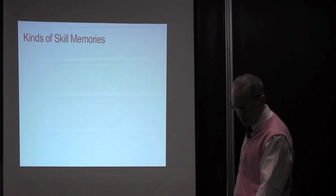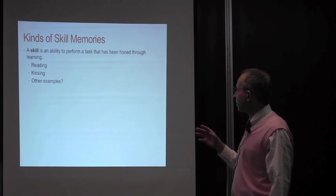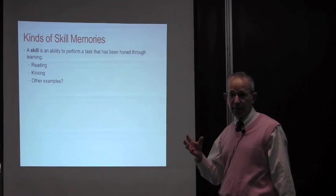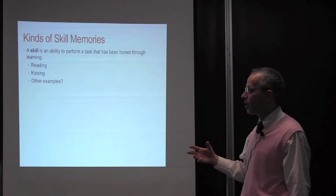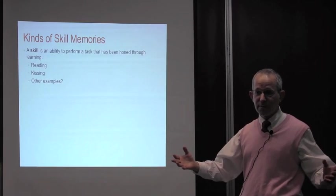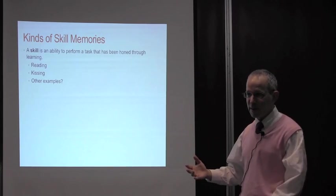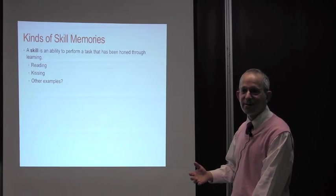There are a number of different kinds of skill memories. A skill is an ability to perform a task that's been honed through learning. It can't be something that's innate. There has to be learning involved. Examples are reading, kissing, riding a bike.